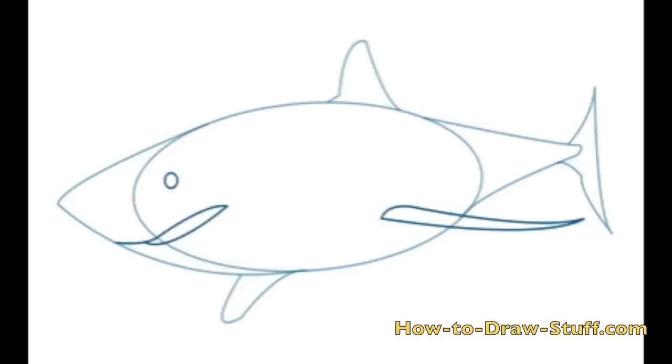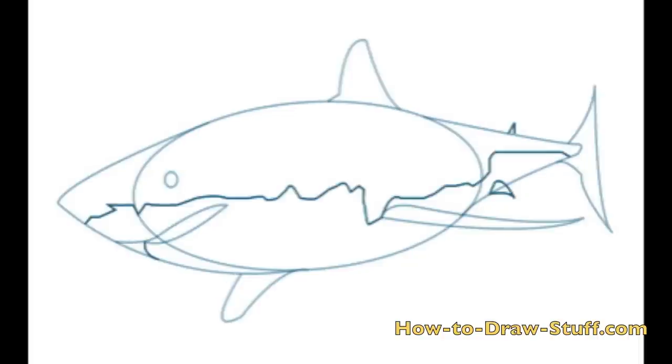Now you can begin to add some character to the great white shark by adding the eye and the line like the one in the picture for the mouth. Also draw a shape like the one seen here to represent the left fin. Notice how long the left fin is compared to the right fin. Can you see the shark yet?